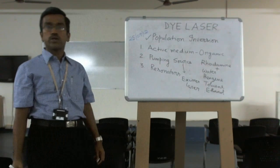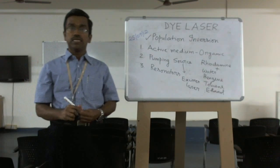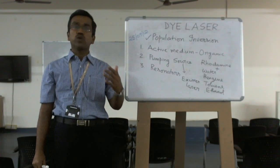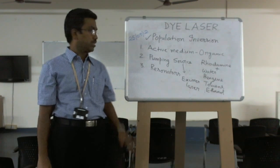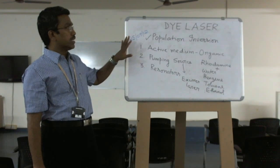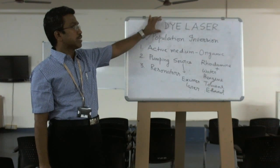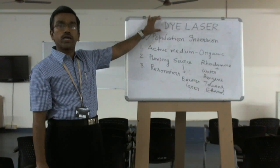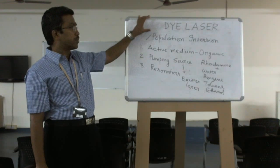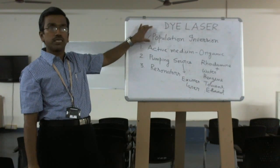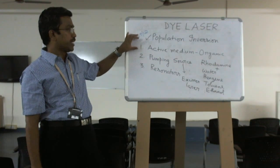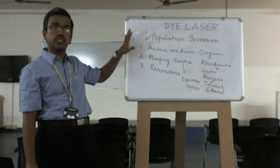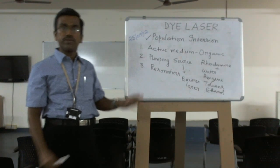And the resonators, resonator is nothing but mirrors with full reflectors. So what is the dye laser? It is nothing but an organic dye laser or liquid laser. The principle of this laser is population inversion, and the three major components are active medium, pumping source, and resonators.